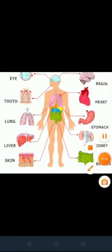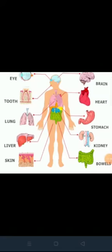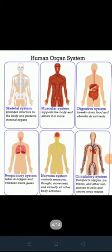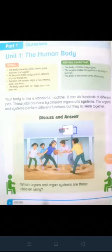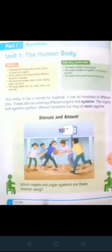So what is an organ? An organ is a collection of millions of cells. And what is an organ system? An organ system is a group of organs that work together as a biological system to perform one or more functions. The organs and systems perform different functions but they all work together. Lekin yeh sab mil kar kaam kertay hain.